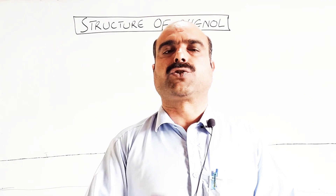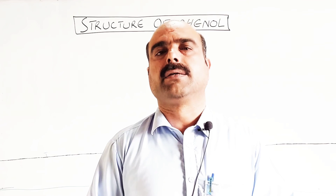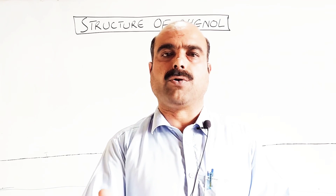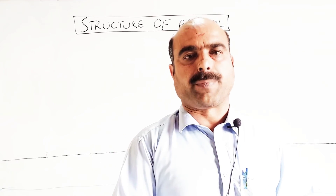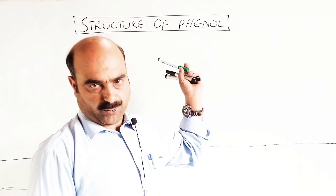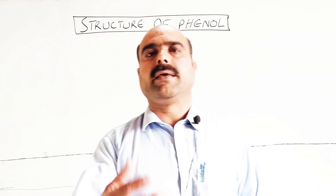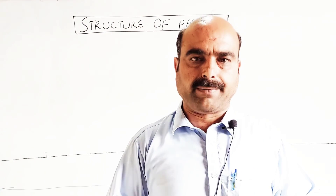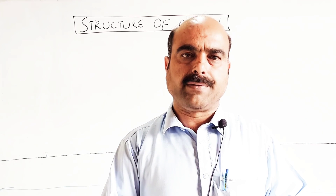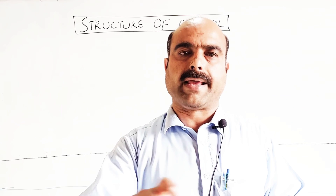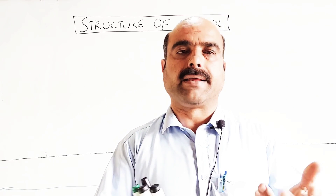Students, this topic is from Organic Chemistry, Chapter No. 6: Alcohols, Phenol and Ethers. The topic is Structure of Phenol. The phenol structure explains the geometry, carbon-oxygen bond length, carbon-oxygen-hydrogen bond angle, and internal angle in the benzene ring.